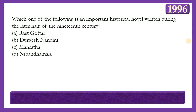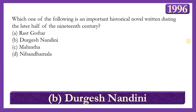Next question: Which of the following is an important historical novel written during the later half of the 19th century? Options: Rajmohan's Wife, Durgesh Nandini, Sitaram, or Nayan Damala. The answer is option B — Durgesh Nandini — a great historical novel written by Bankim Chandra Chattopadhyay, dealing with the conditions and suppressive nature of British rule in India.